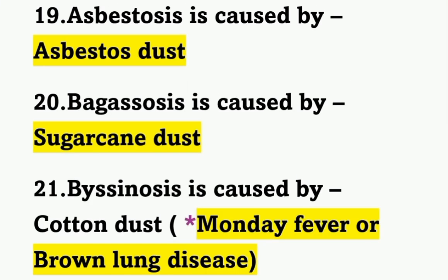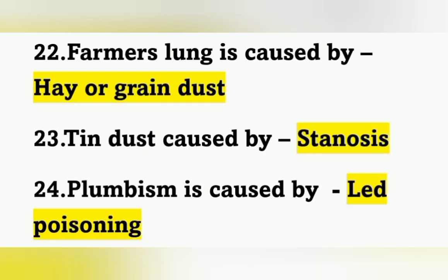Bagassosis is caused by sugarcane dust — an important question. Byssinosis is caused by cotton dust and is also known as Monday fever or brown lung disease. Black lung disease is Anthracosis; brown lung disease is Byssinosis — a very important point. Farmer's lung is caused by grain dust or hay dust.